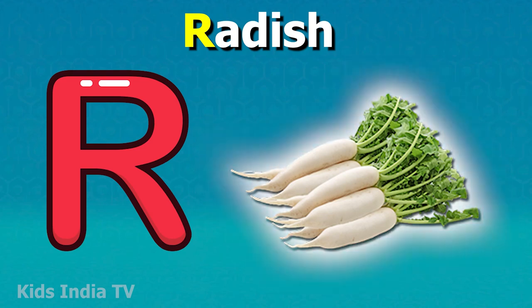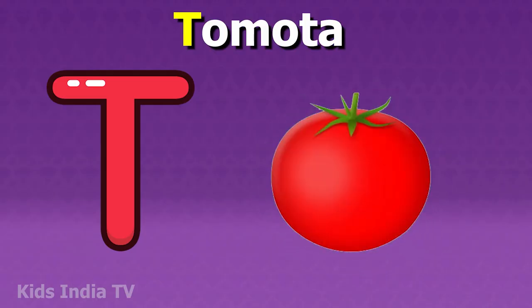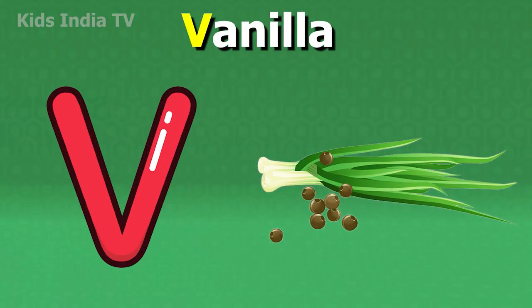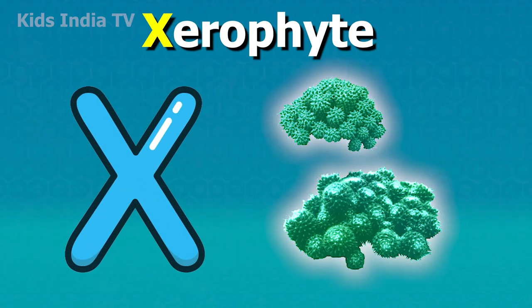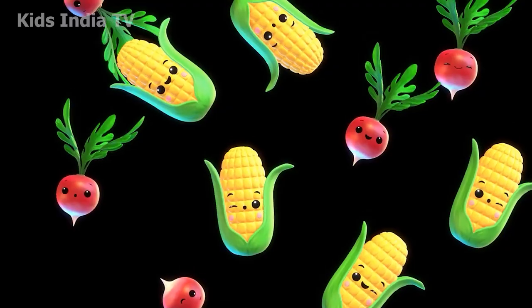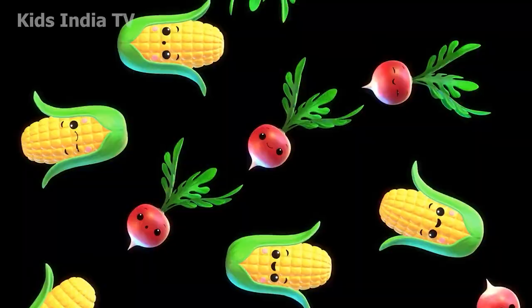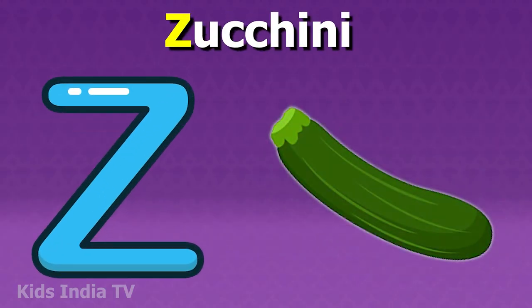R for radish, S for spinach, T for tomato, U for ulluco, V for vanilla bean, W for wax gourd, X for xerophyte, Y for yam, Z for zucchini.